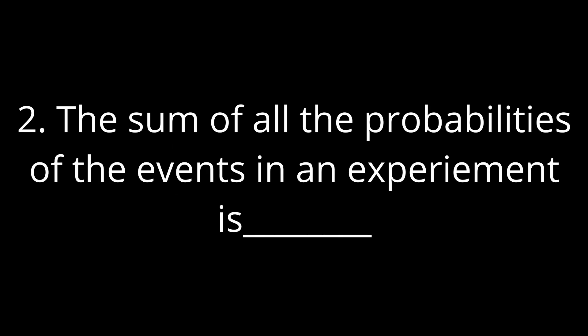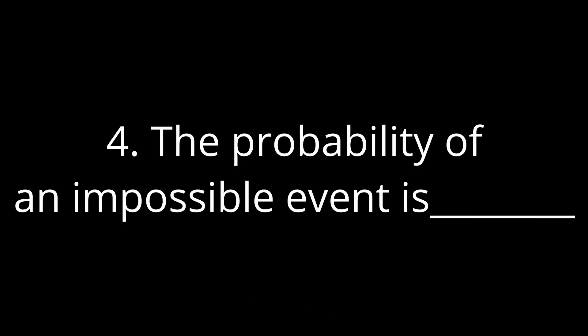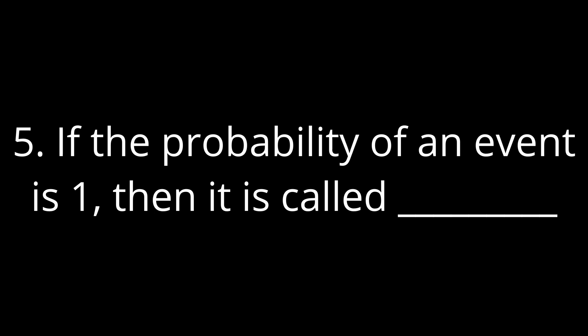The sum of all the probabilities of an experiment is ____. The probability of happening of an event always lies between ____. The probability of an impossible event is ____. If the probability of an event is 1, then it is called ____.